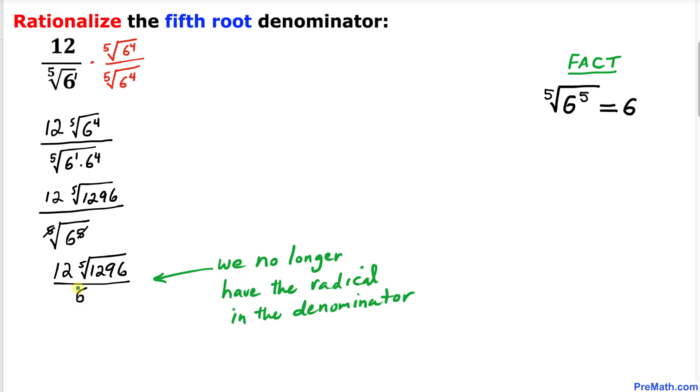We can see we no longer have a radical at the denominator. Now let's simplify: 6 goes into 12 two times, so we're going to reduce it. We simply got our simplified answer as 2 times the fifth root of 1296.